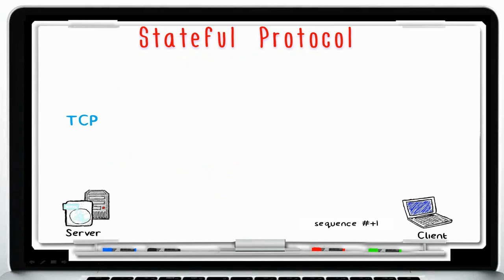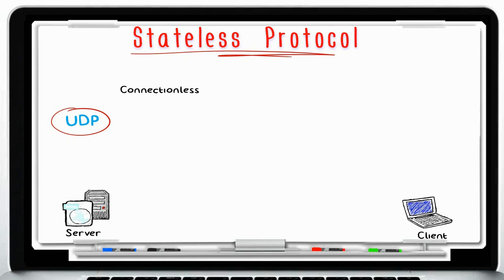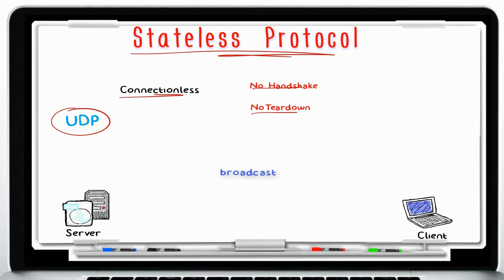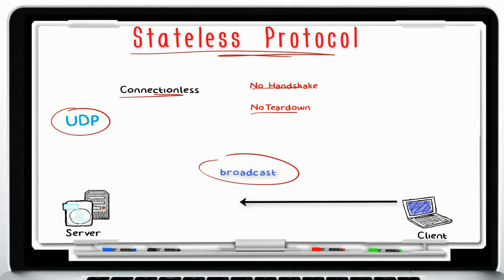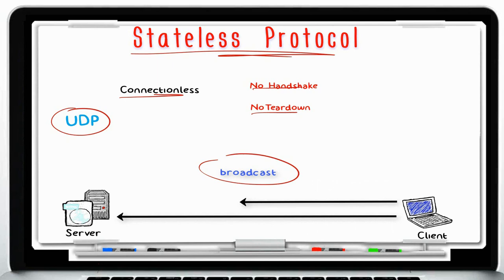Now let's talk about UDP, the User Datagram Protocol. UDP is a stateless protocol — it is much simpler than TCP and doesn't perform any of TCP's complex functions. It's called a thin protocol because there is no overhead. There are no virtual circuits to establish, no handshake, and no teardown — making it a connectionless protocol. UDP is very efficient for broadcast packets or any application that just needs to send a query or receive a reply. There is no reliability and no retransmissions. If we don't get a reply, we can assume the packet was lost and send another request to the same or a backup server.